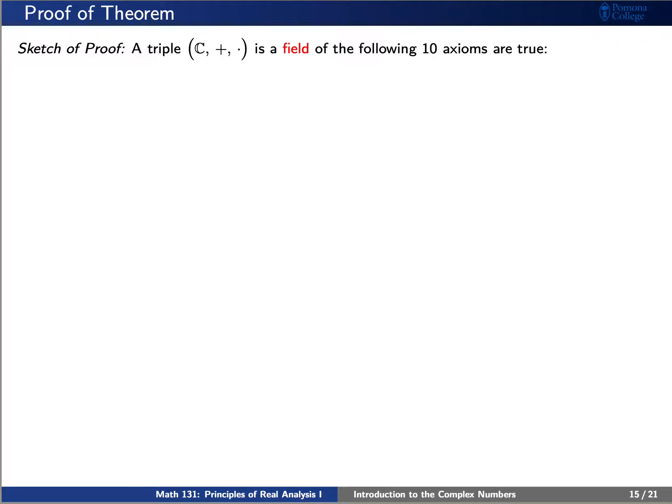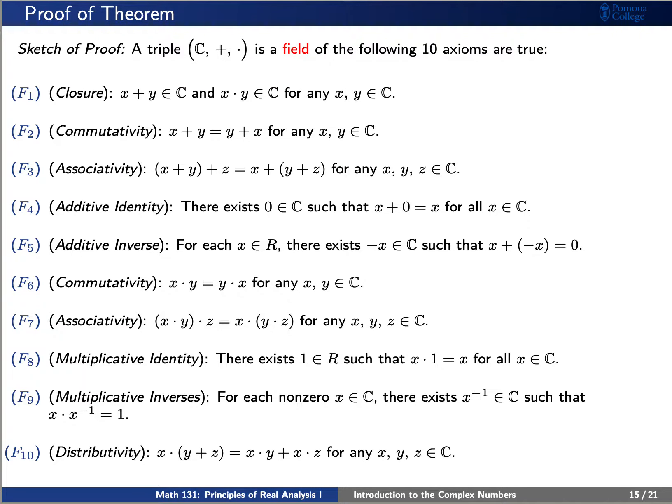Remember that a triple is said to be a field if the following ten axioms are true. We need to have closure of addition and multiplication, commutativity of addition and multiplication, associativity of addition and multiplication, an additive identity, an additive inverse, a multiplicative identity, a multiplicative inverse, and a distributivity law that relates addition and multiplication.